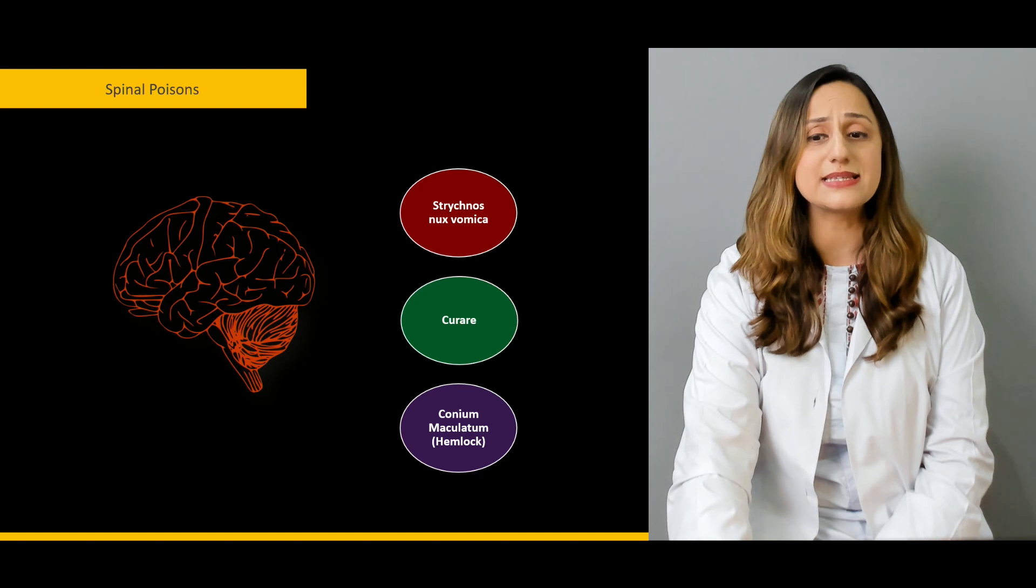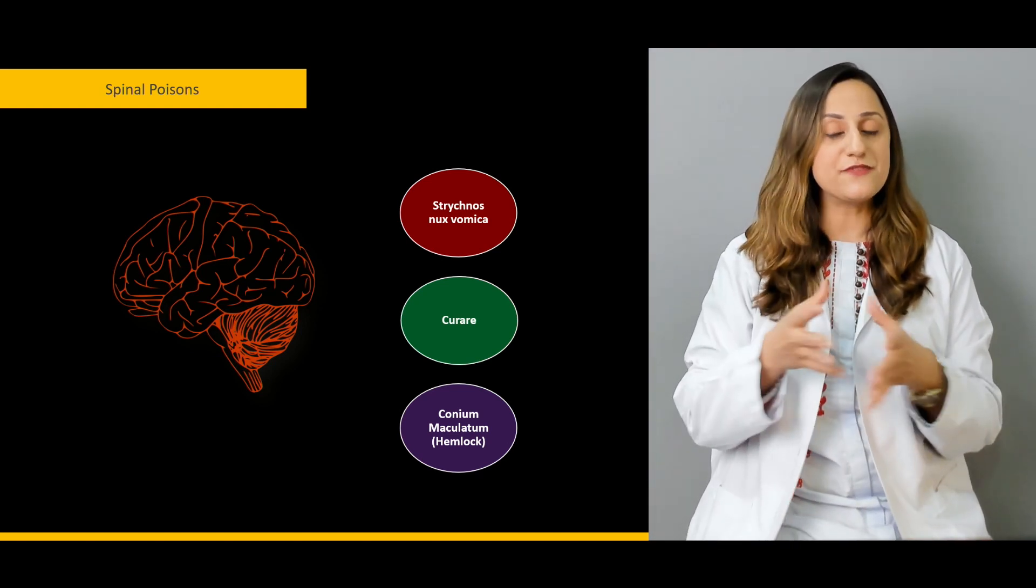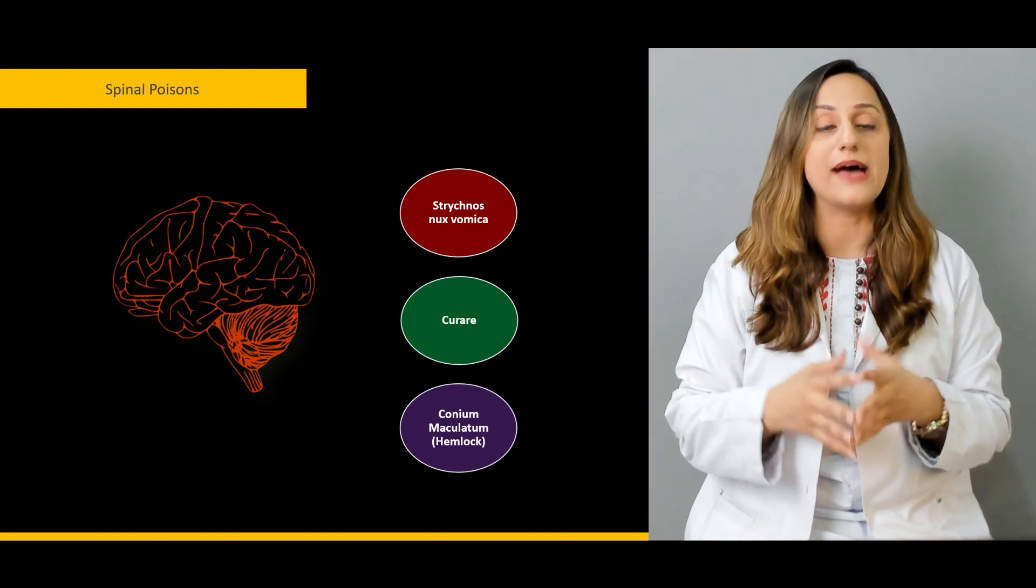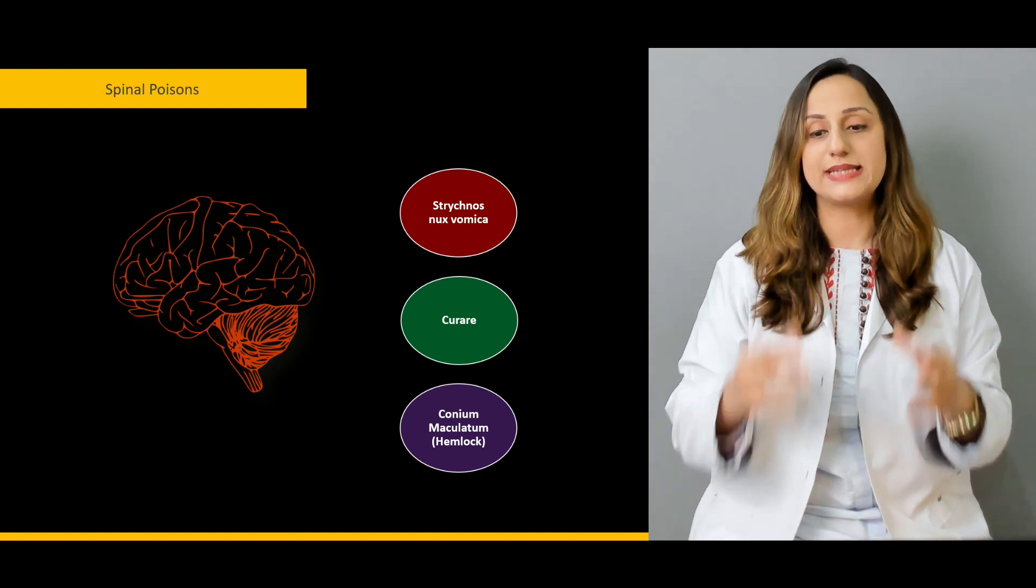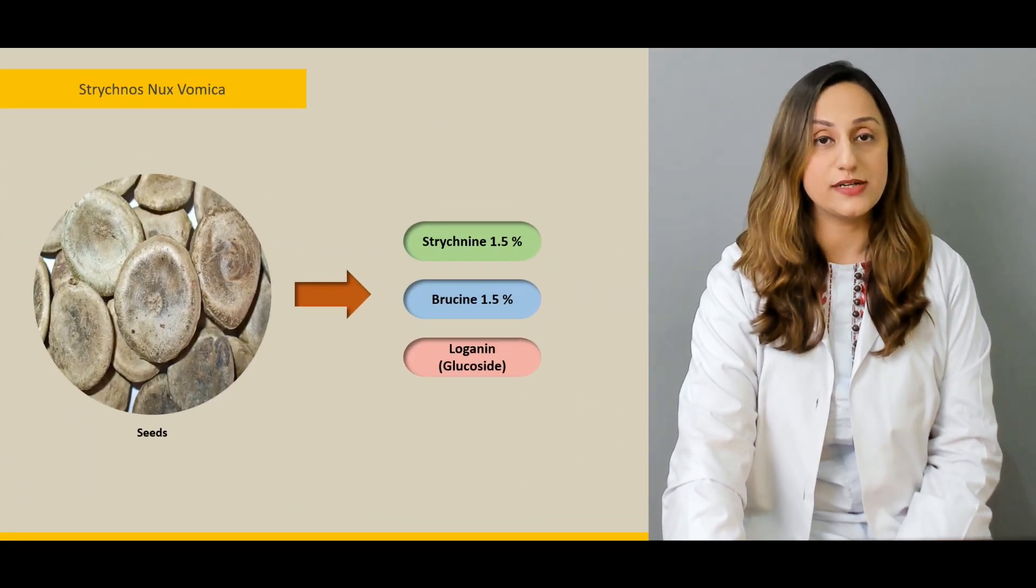We'll be discussing the common names associated with these specific poisons. Nux vomica is given to strychnine, we have hemlock which is given to conium, and we'll be discussing them in detail.